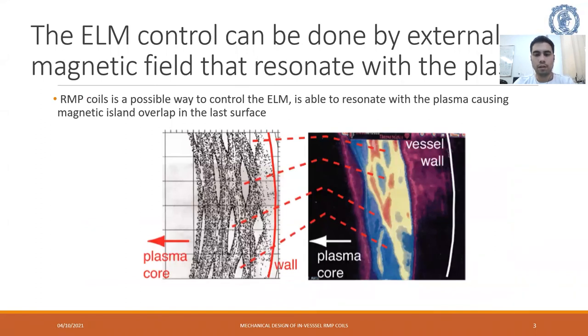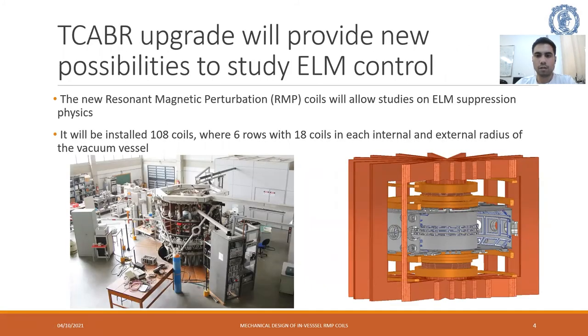RMP coils is a possible way to control the ELMs. They are able to resonate with the plasma and cause magnetic island overlap in the edge surface. When I apply external magnetic field in the plasma, we can make overlap in the magnetic island, which makes the ergodization, drains the energy, lowers the temperature, and avoids the ELM. The new resonant magnetic perturbation coils will allow studies on the ELM suppression physics. It will be installed 108 coils: 6 rows with 18 coils in each at internal and external radius of the vacuum vessel. Here we can see the TCABR Tokamak. Here we can see CP coils in internal radius and I coils in external radius and C coils in external radius.